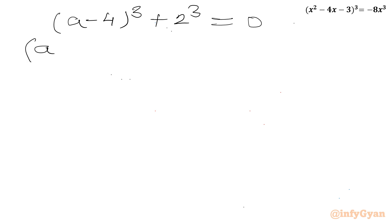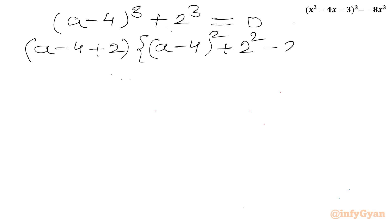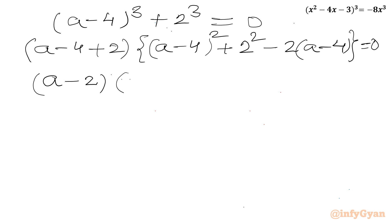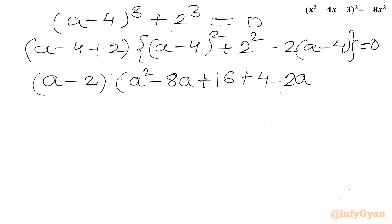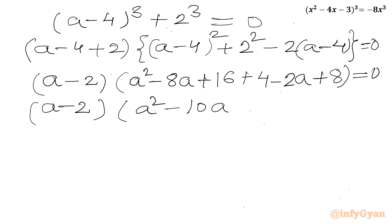Applying the formula: (a - 4 + 2)·[(a - 4)² + 2² - 2(a - 4)] = 0. This gives (a - 2)·[a² - 8a + 16 + 4 - 2a + 8] = 0, which simplifies to (a - 2)(a² - 10a + 28) = 0.